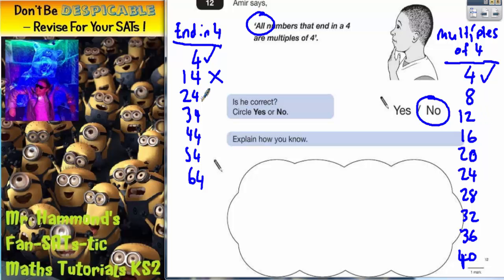If you want to get a few extra examples, 24 is a multiple of 4, but 34 isn't, because 34 is not in this list. Now all you need to do for your explanation is to say which examples you found that prove he's wrong.